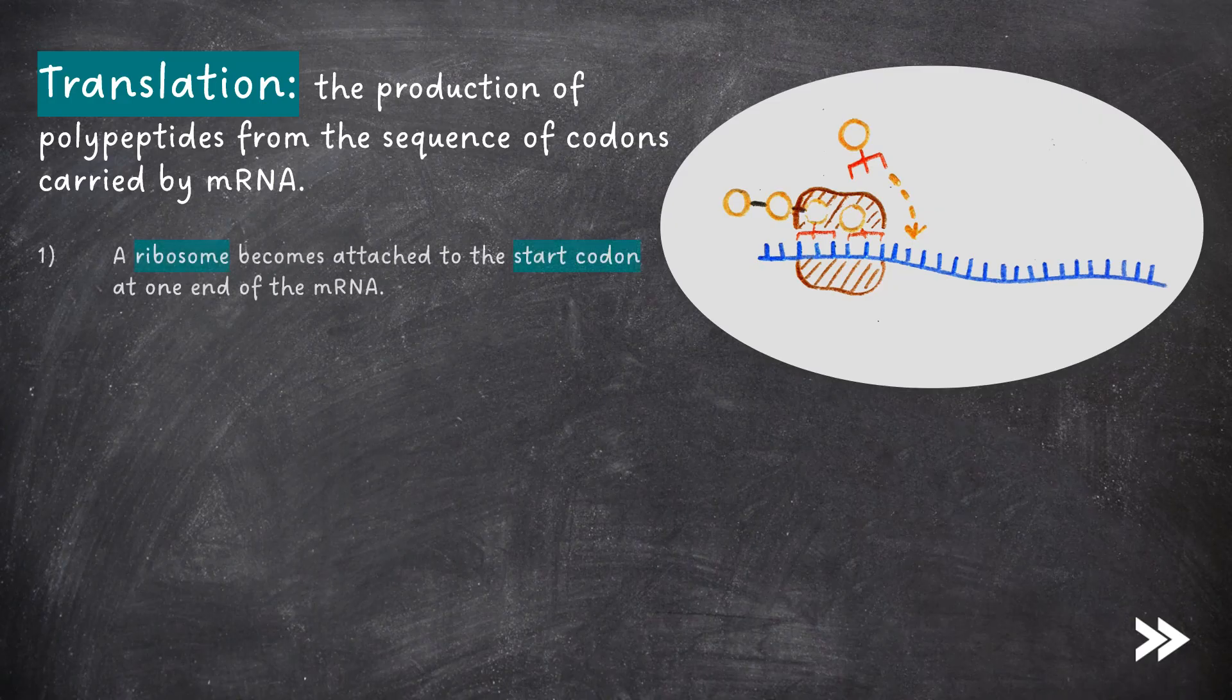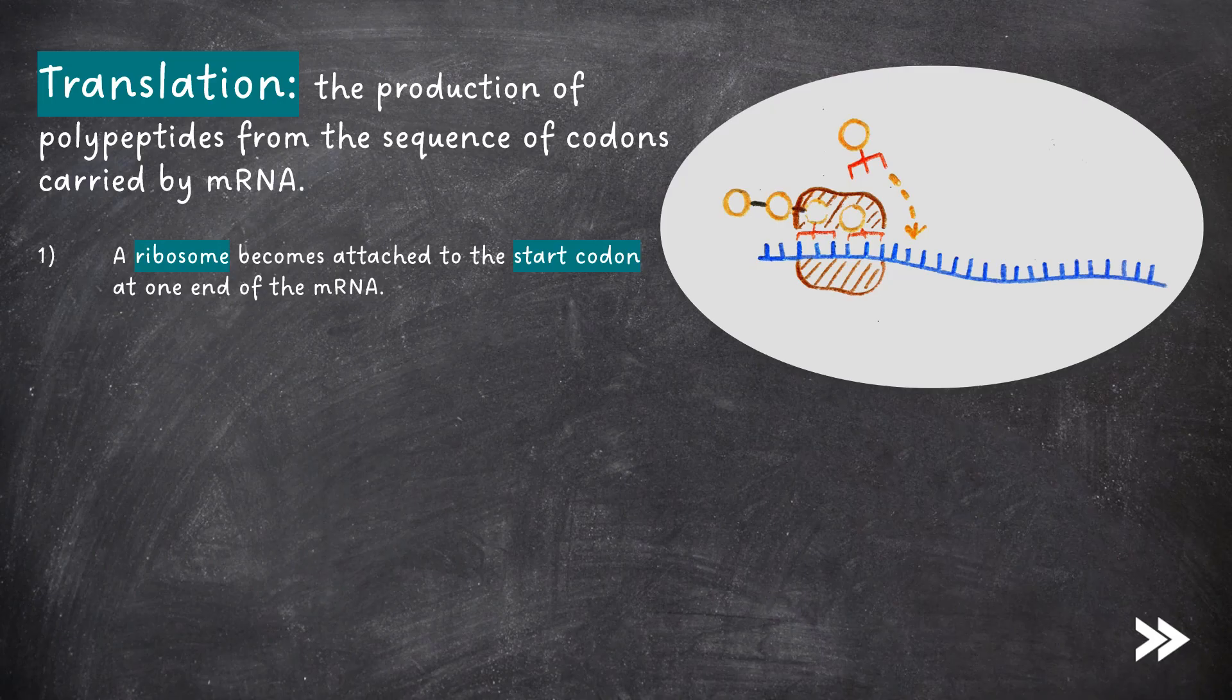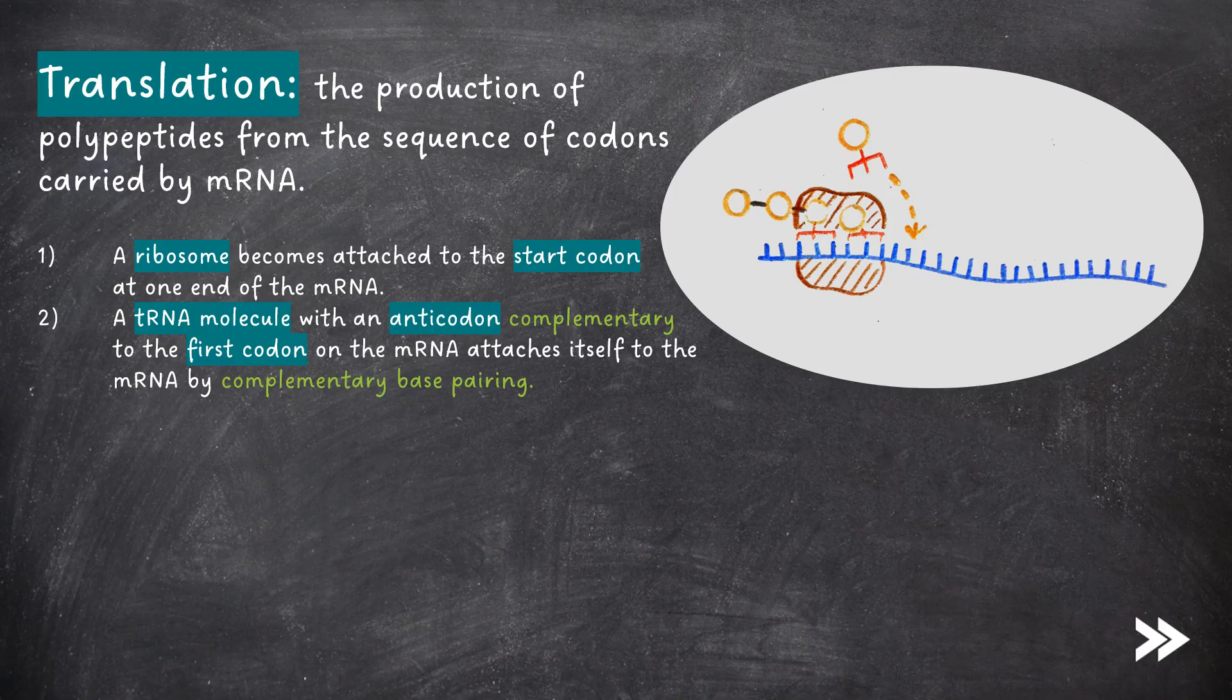First of all, a ribosome becomes attached to the start codon at one end of the mRNA. A tRNA molecule with an anticodon complementary to the first codon on the mRNA attaches itself to the mRNA by complementary base pairing.